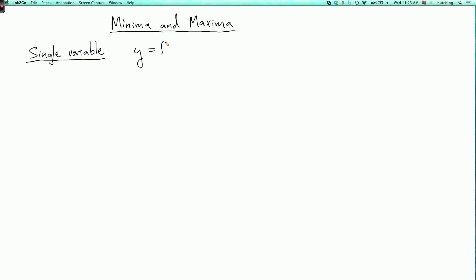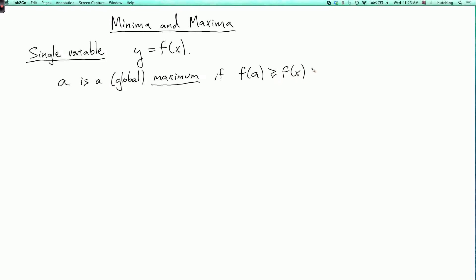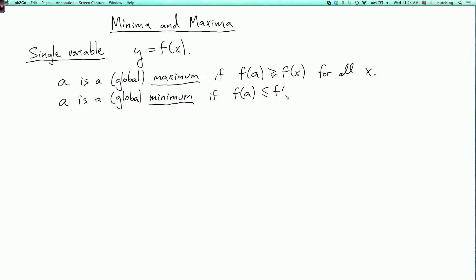Suppose you have a function y equals f of x. We say that a is a global maximum if f of a is greater than or equal to f of x for all x — so a is a value of x for which f has the largest possible value. And we say that a is a global minimum if f of a is less than or equal to f of x for all x, so a is a point where f takes the smallest possible value.